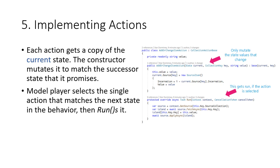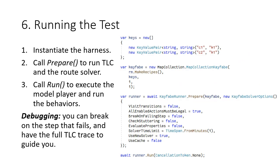Finally, it's time to run the test. First, instantiate the harness, then call prepare, which runs TLC and the route solver to produce the series of behaviors. Then call run, which executes the model player over those behaviors. Debugging is quite simple because you can break on the step that fails, and you have the full TLC trace to guide you.